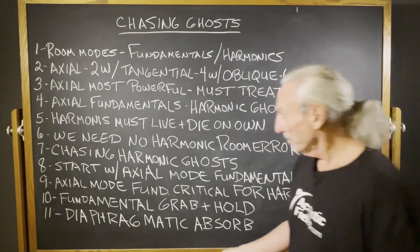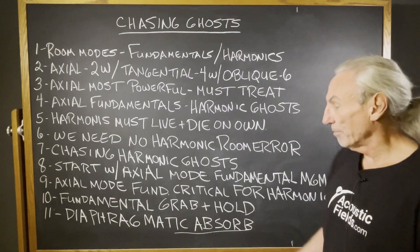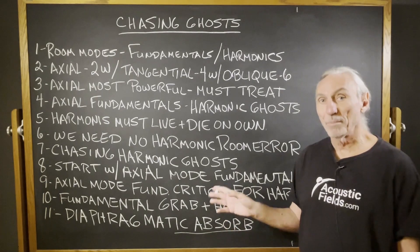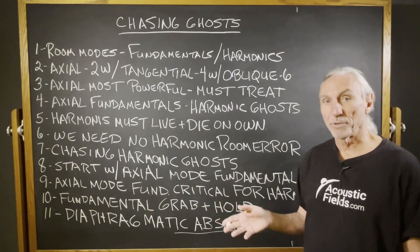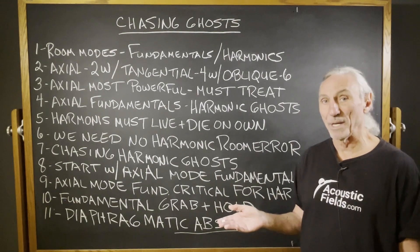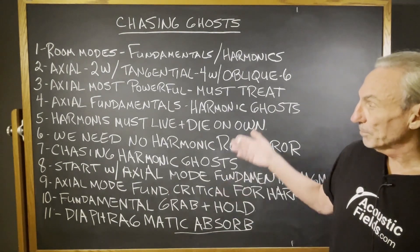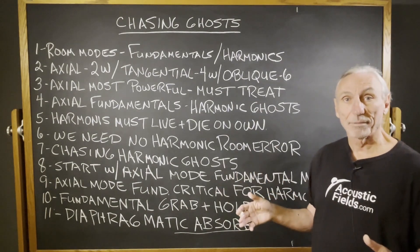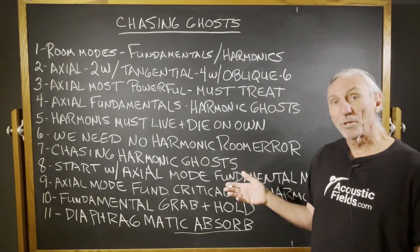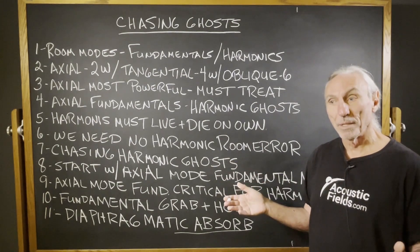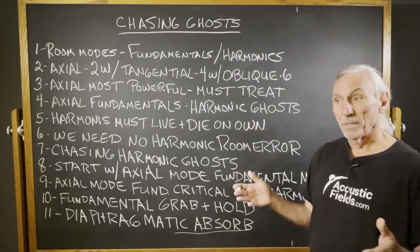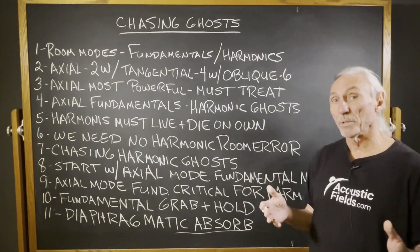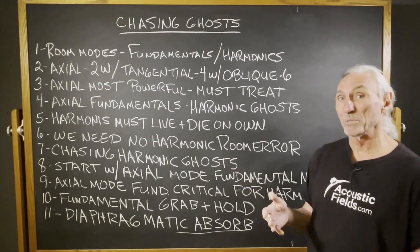There's only one technology that can give you that kind of horsepower: diaphragmatic absorption. Boxes filled with building insulation can't do it. Membrane absorbers can't do it. Helmholtz absorbers are too frequency-specific and you need so many of them. Broadband diaphragmatic absorption will give you that kind of horsepower. Yes, it's heavy and takes up space, but what is the goal? Is it to treat the room with treatment that doesn't work, or with treatment that works but takes a little more space and is heavier?